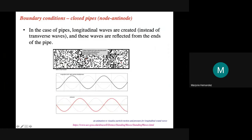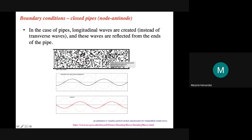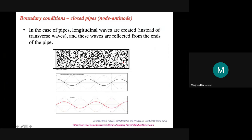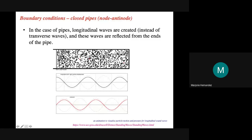Inside the pipe you can see the air particles moving back and forth. Notice this red dot is moving back and forth while this one is staying still. At the still point there is no displacement — that is the node — and at the moving point there is displacement — that is the antinode. This is what's happening inside the pipe: the air particles move back and forth, not up and down.